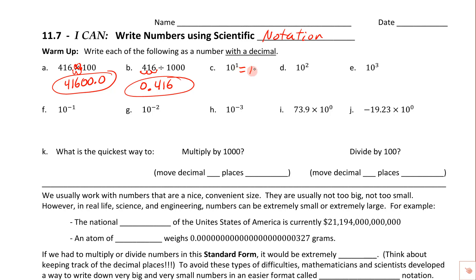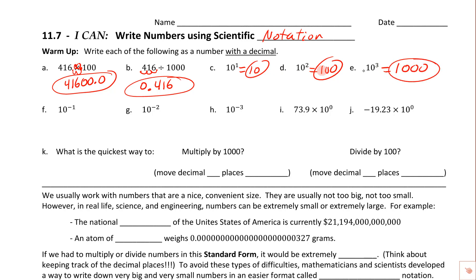Having those powers of 10 memorized is really useful. 10 to the first means one zero, so it's just 10. 10 squared means 10 times 10, which is 100 — notice two for the exponent and two zeros in the answer. 10 to the third is a one followed by three zeros. Having these powers of 10 memorized is going to be super important for what we do today.